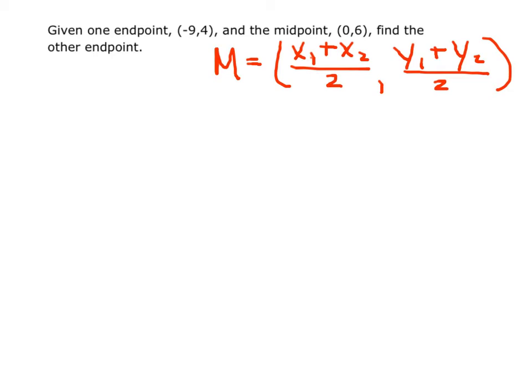So we know one endpoint is negative 9, 4. Let's label that our x sub 1, y sub 1.